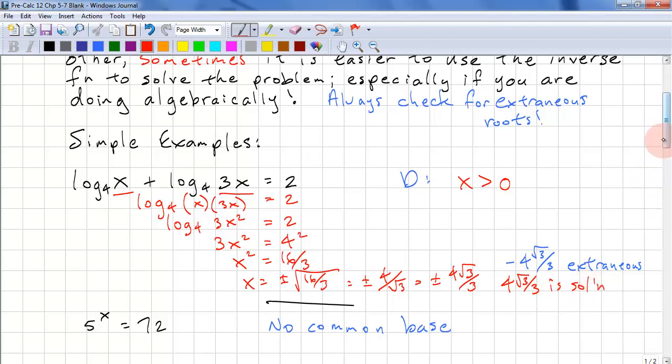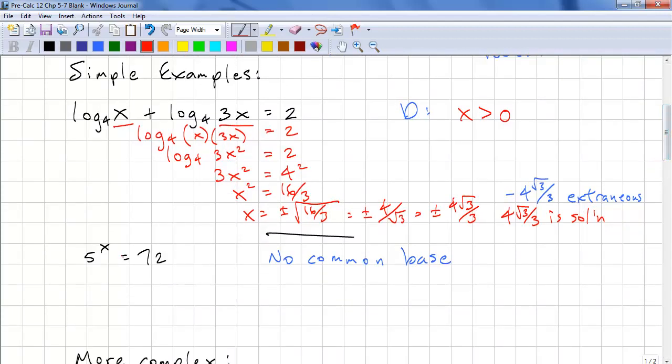Let's look at another example. We have 5^x = 72. There's no common base here, so let's use logarithms to help us out.